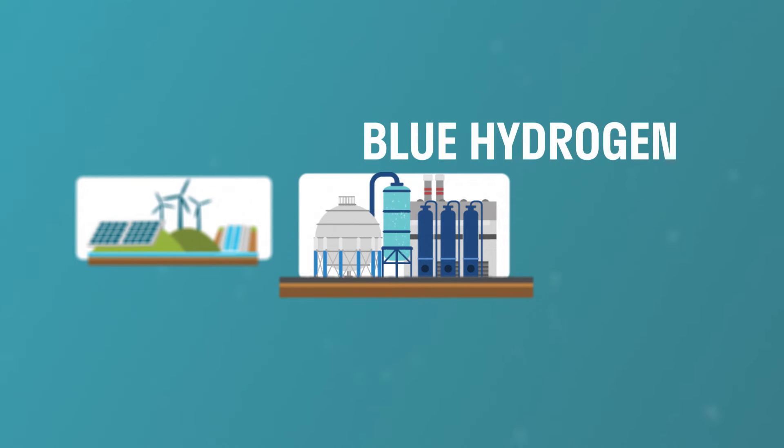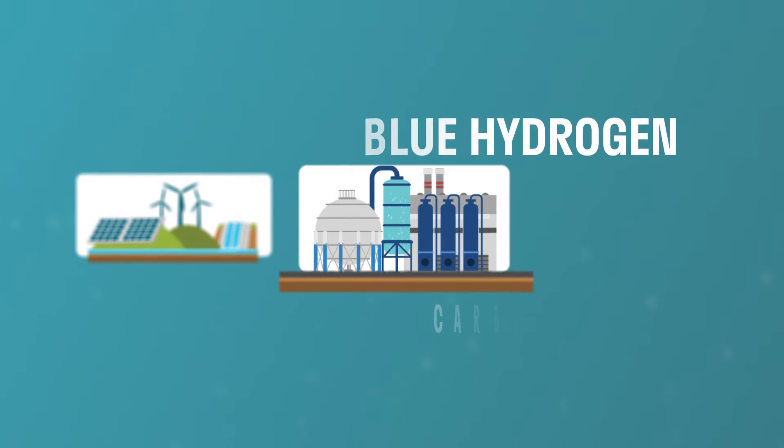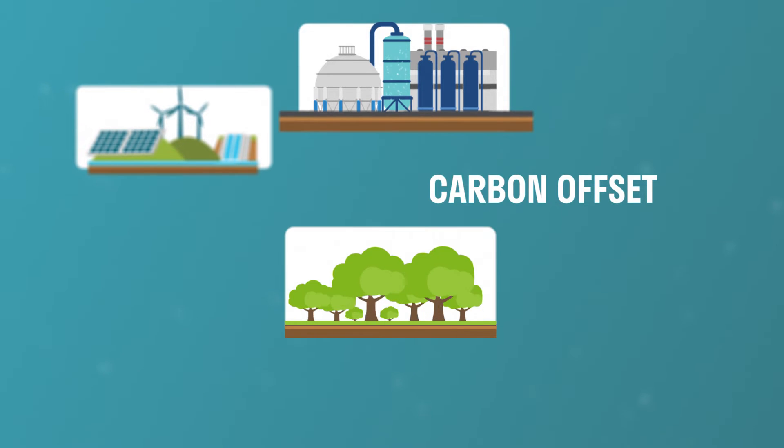Blue hydrogen is carbon neutral, created from either natural gas or biogas. It is produced from reacting gas with high temperature steam to produce hydrogen. Blue hydrogen is carbon neutral when sourced from biogas or offset with trees.